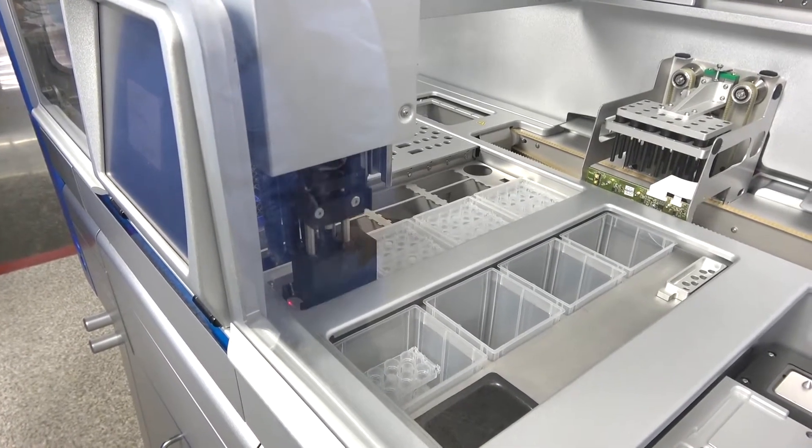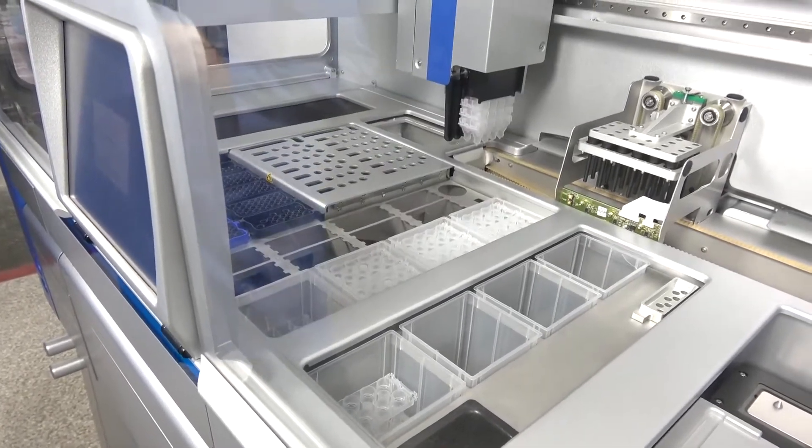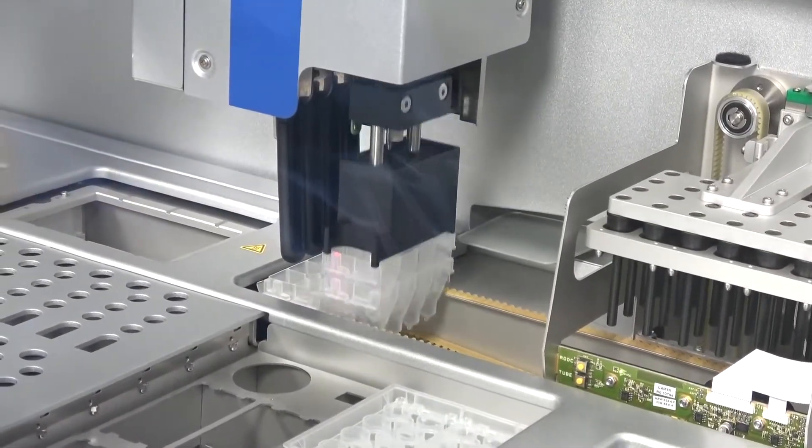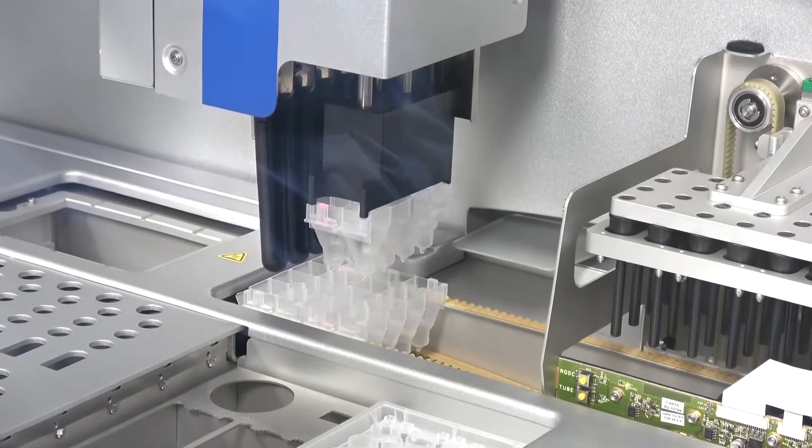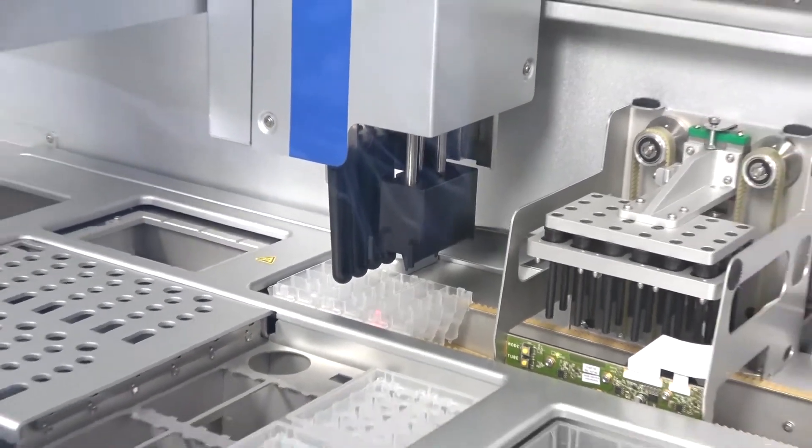There it finds it, goes ahead and reaches. It grabs actually three of these units, brings it back to the conveyor belt, drops one, goes and puts the other one in the third position, and the third. So we know it's very accurate setting the system.